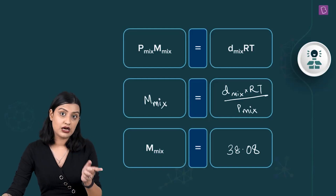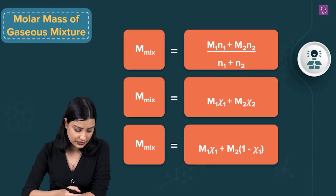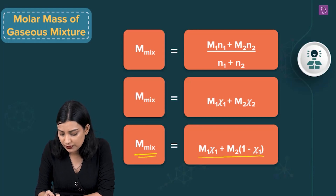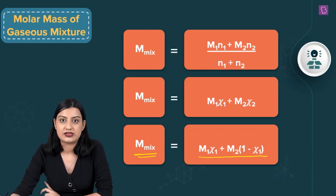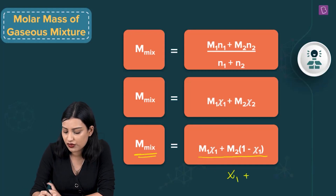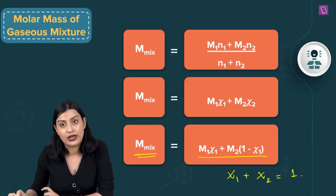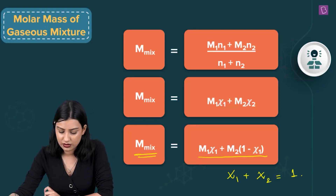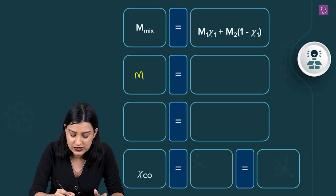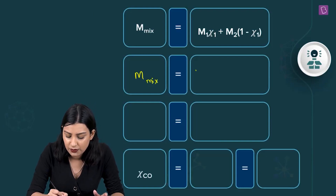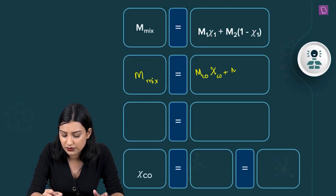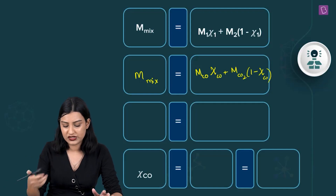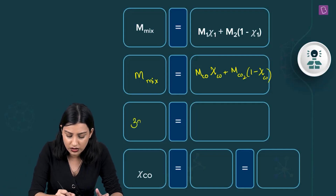The mixture contains carbon monoxide and carbon dioxide. The molar mass of the mixture equals M₁x₁ + M₂(1 − x₁), because mole fraction 1 + mole fraction 2 = 1. If component 1 is carbon monoxide, the equation becomes: molar mass of mixture = molar mass of CO × x_CO + molar mass of CO₂ × (1 − x_CO). The mole fraction of CO is what we need to find.